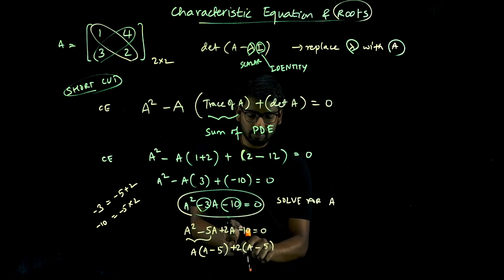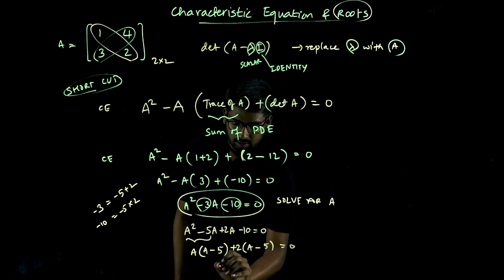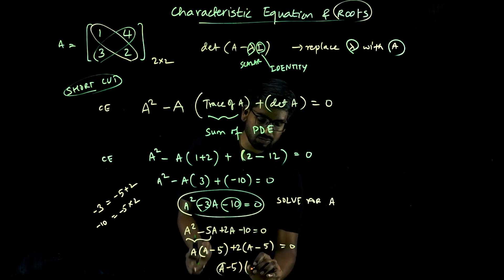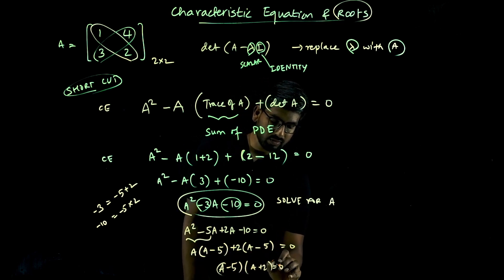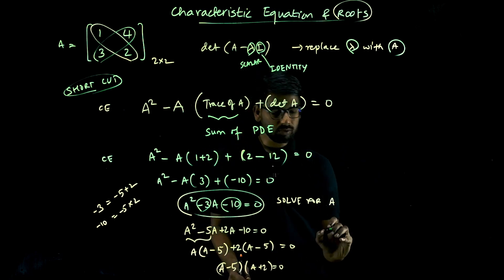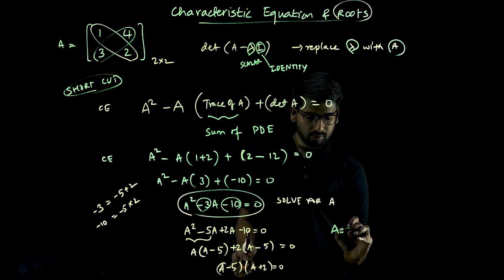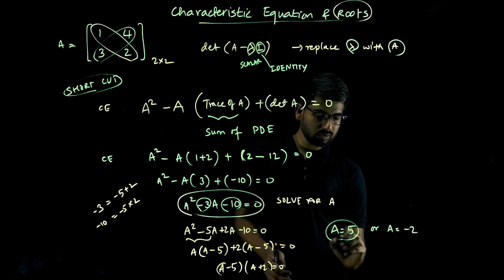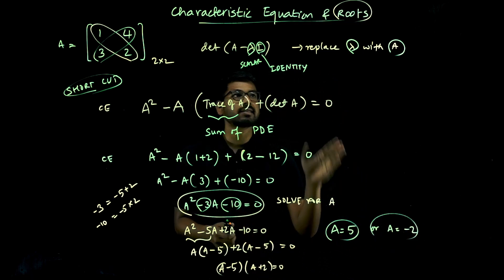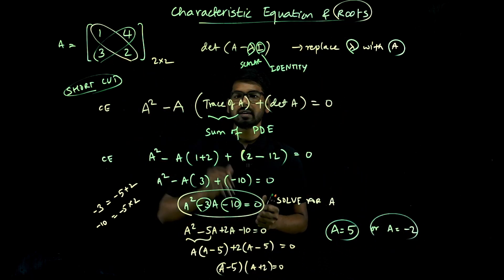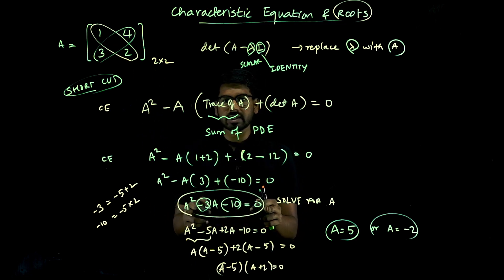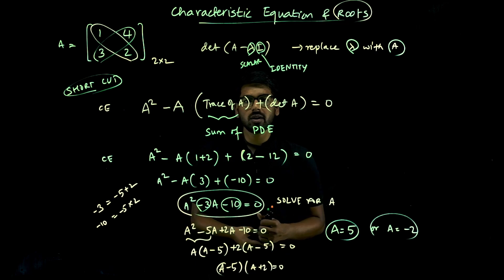Factoring gives (lambda minus 5)(lambda plus 2) equals zero, so lambda equals 5 or lambda equals minus 2. These are the characteristic roots of matrix A. The question may ask to find the characteristic equation or the characteristic roots.